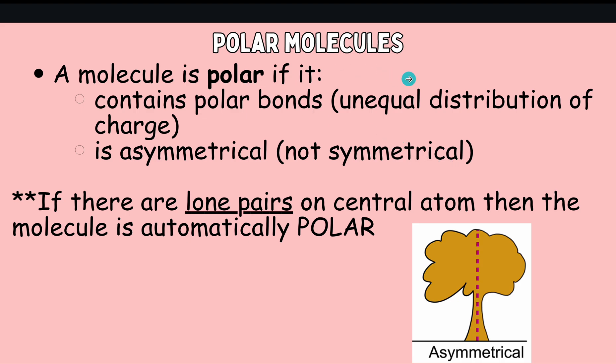A polar molecule is polar if it contains polar bonds, which means that there's an unequal distribution of charge. So the electrons are more towards one atom than the other, and if it is asymmetrical or not symmetric.